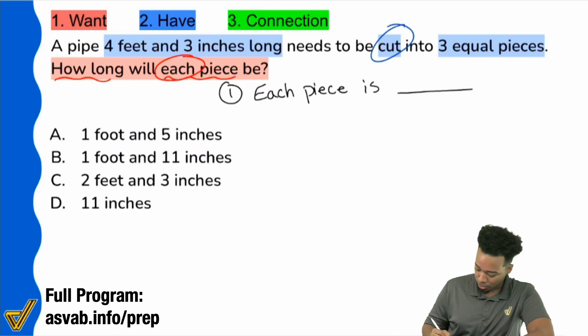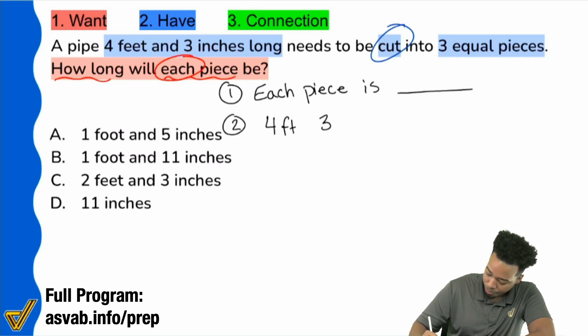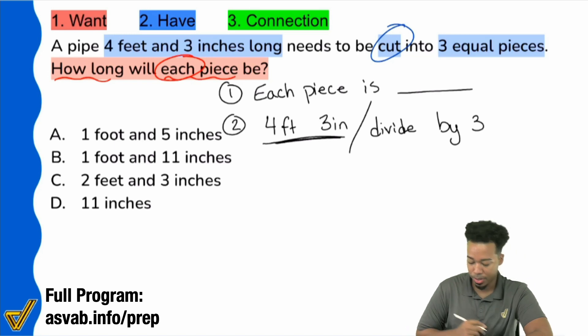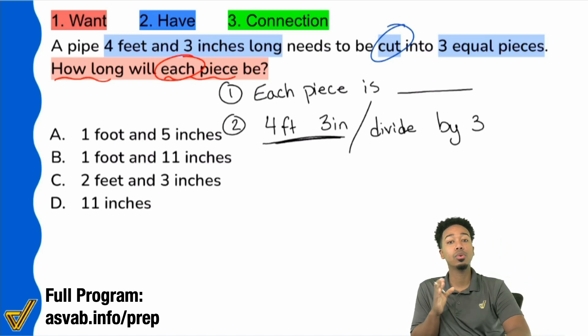So we need to learn how to handle numbers. All right. So don't freak out because all we have to do here is again, we're going to take the information we have. That's the pipe that's four feet, three inches, and we're going to divide all of this. So divide this whole thing. Divide by three. Divide by three. Three equal pieces.